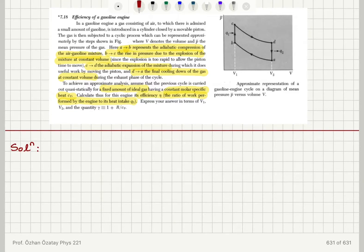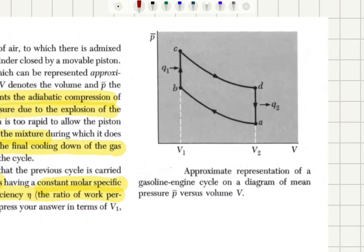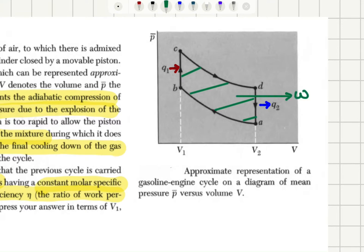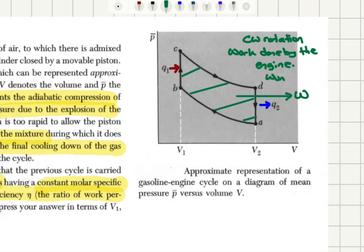We can see that in this cyclic process there is heat being absorbed, Q1, and heat being released, Q2. Using the right-hand rule and looking at the area enclosed by the cycle, it is a clockwise rotation, so W is negative — meaning it is work done by the engine.